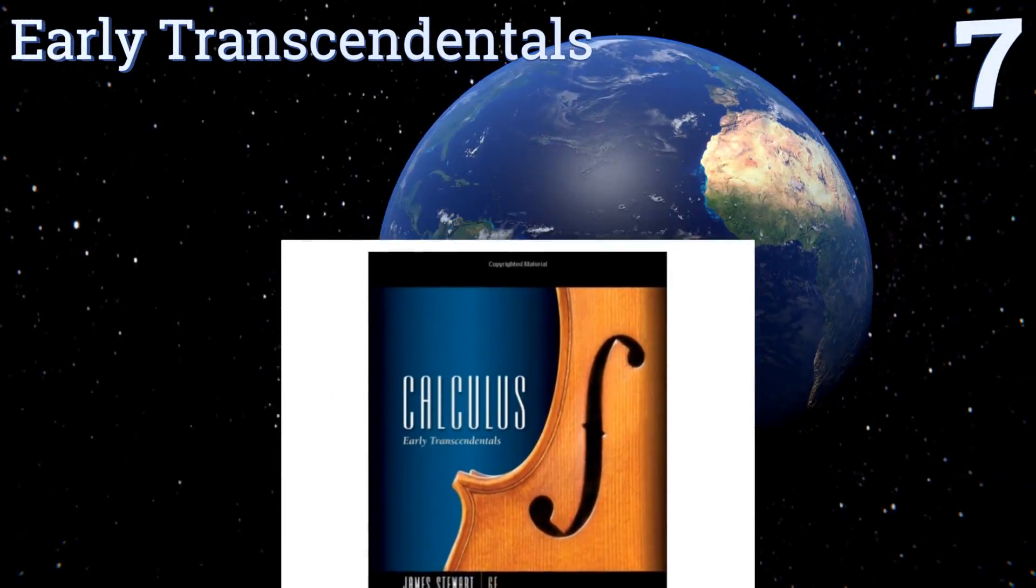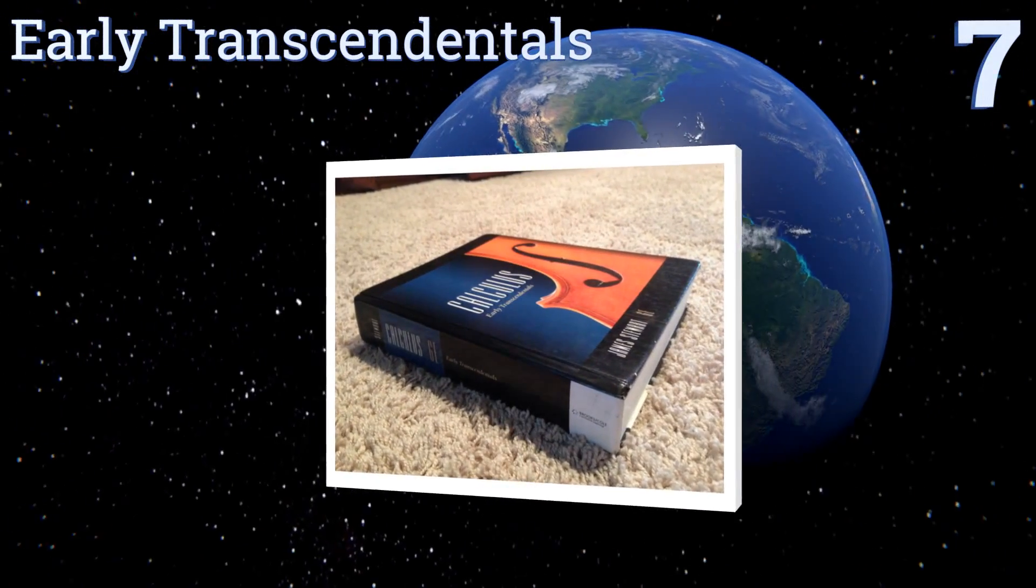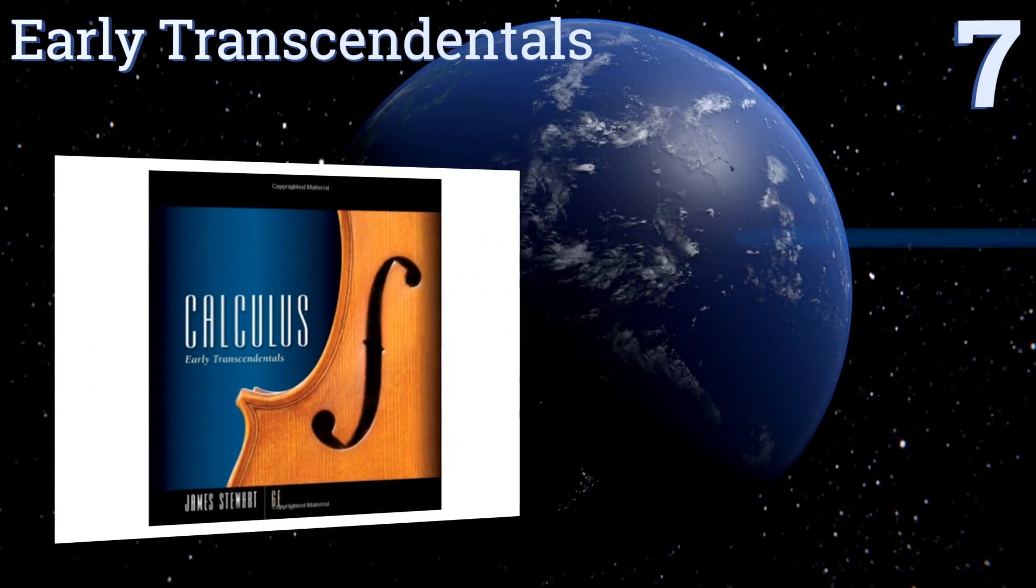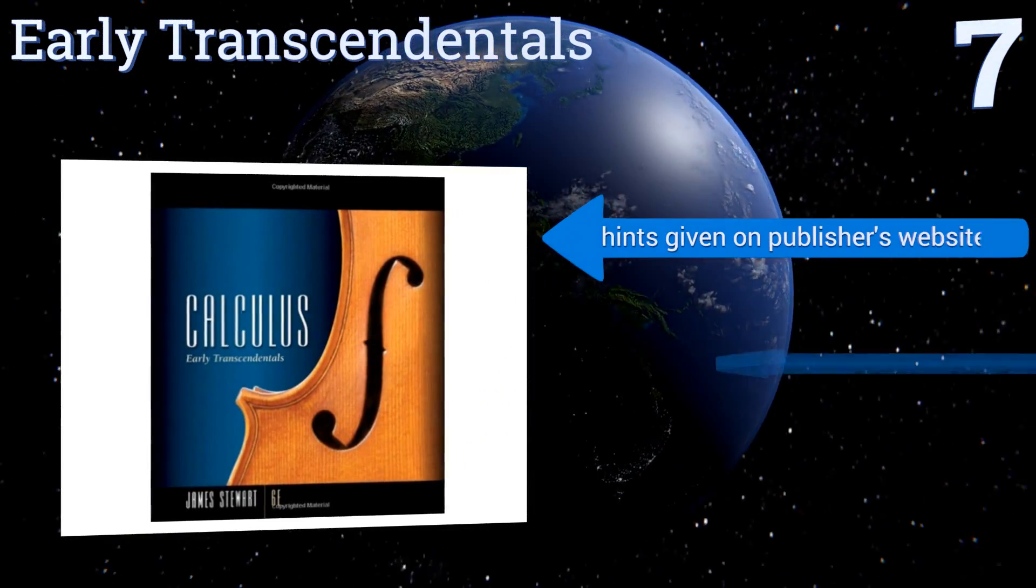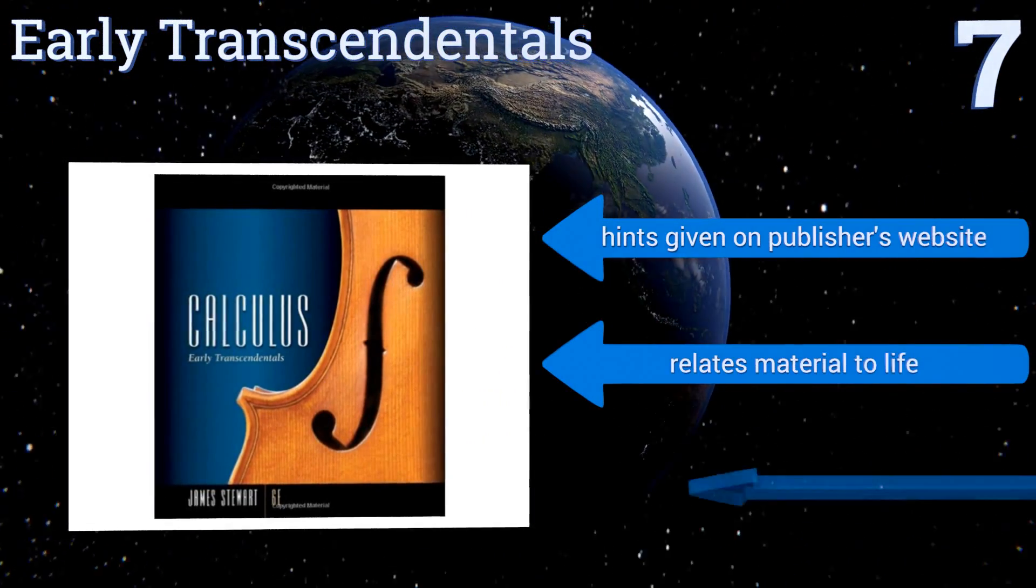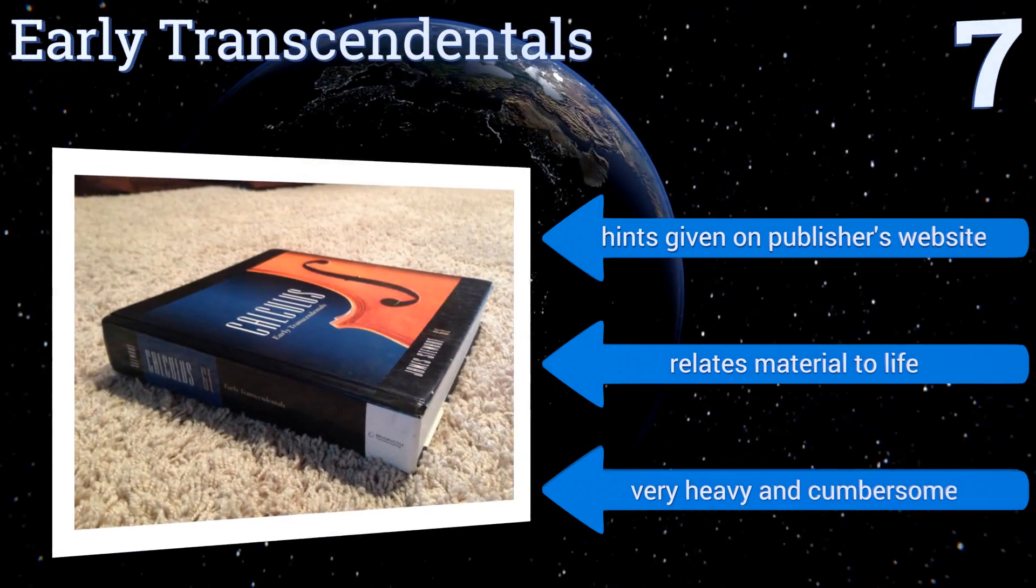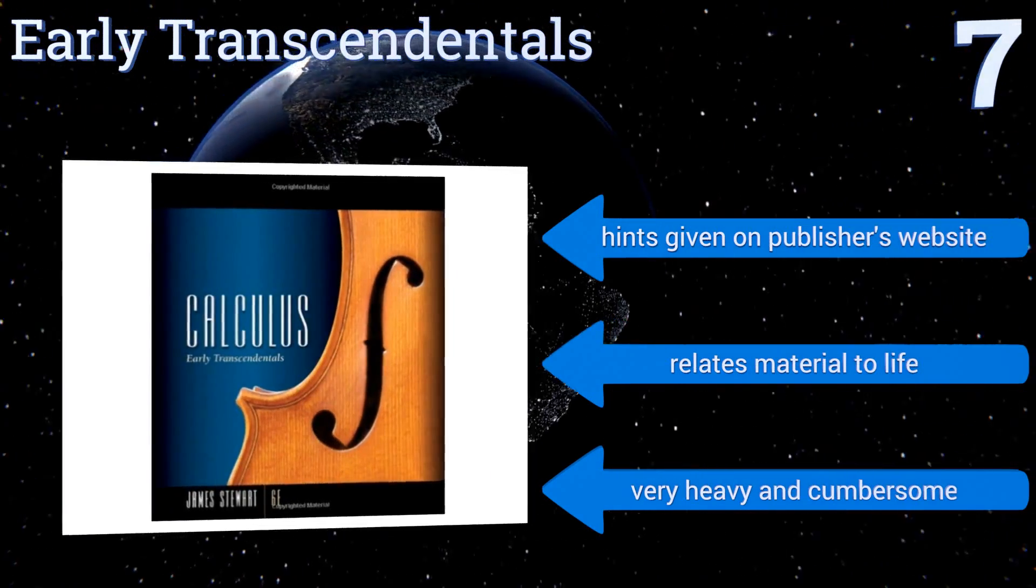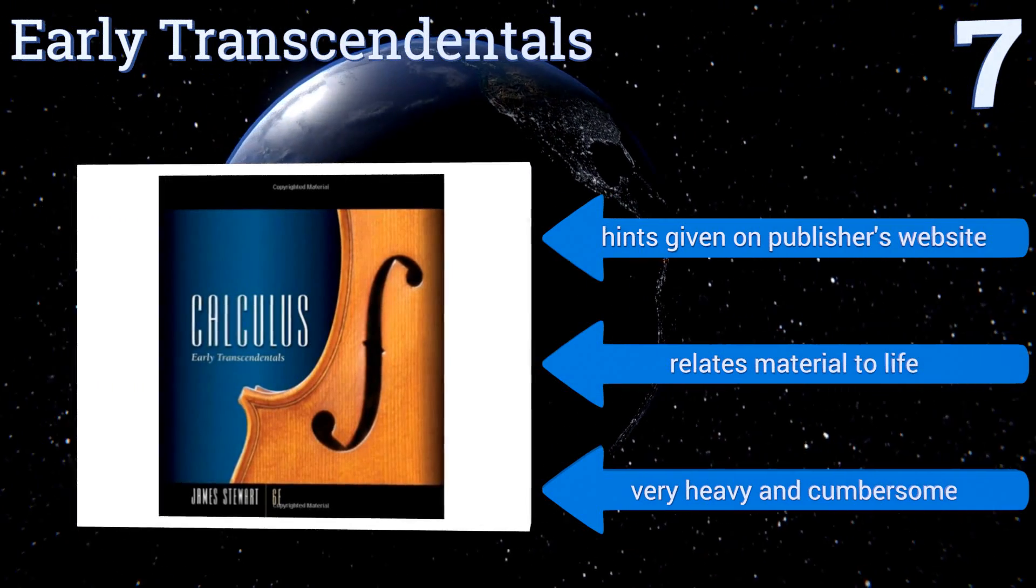At number seven, Early Transcendentals is an excellent guide for working a math problem, giving you a step-by-step look into the process rather than just providing an answer and moving on. This makes it ideal for self-directed learners, as there are no gaps in the instruction. Hints are available on the publisher's website and it relates material to life, but it is very heavy and cumbersome.